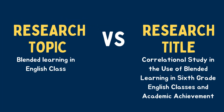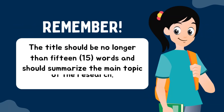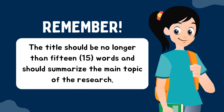For example, if a research topic is blended learning in English class, we can convert it to a research title by saying: 'Correlational study in the use of blended learning in 6th grade English classes and academic achievement.' Remember, the title should not be longer than 15 words and should summarize the main topic of the research.